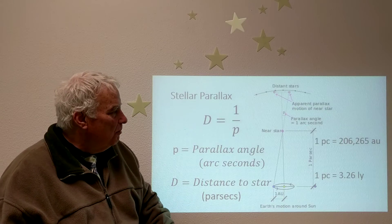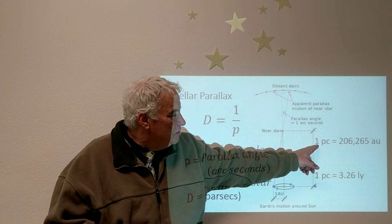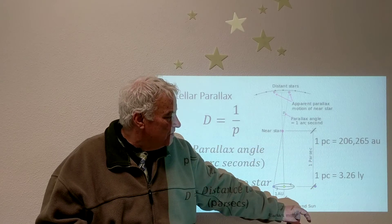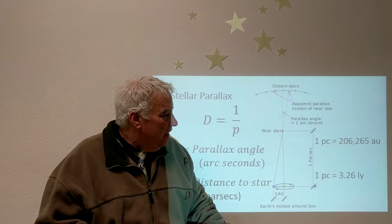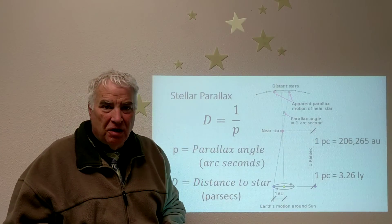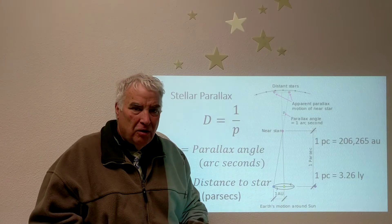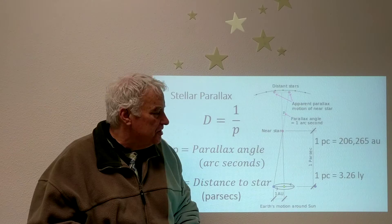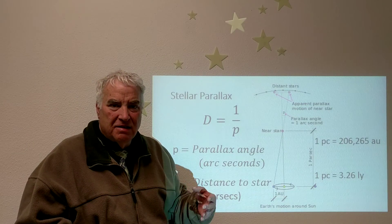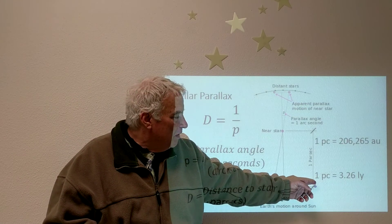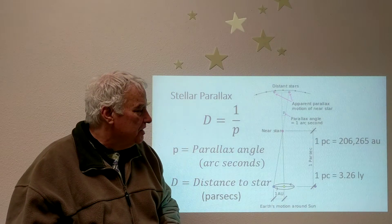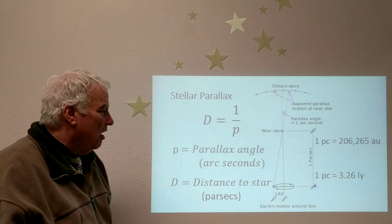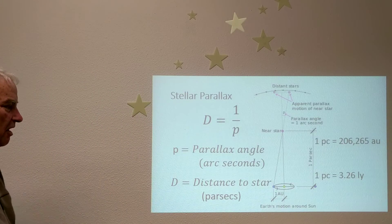One parsec is equal to 206,265 astronomical units — that is by construction of the picture. If we include the fact that we can measure the speed of light, we can convert that to light years. A light year is the distance light travels in one year, and 3.26 light years is one parsec. So a parsec is several times the distance of a light year.